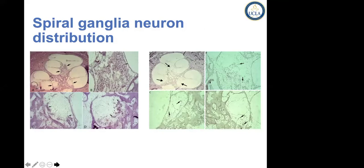The story is much more complicated than simply having linear coverage, because the distribution of spiral ganglion neurons is not homogeneous. In some cases, you have more neurons preserved at the base; in other cases, there are more neurons towards the apex. The numbers of preserved neurons appear to be quite different, and at this point in time we really don't have any way of predicting where you see the most neurons before the surgery.